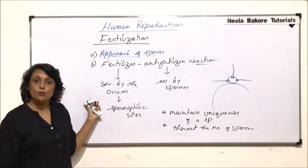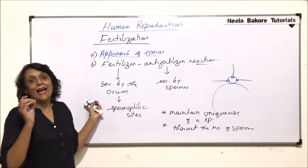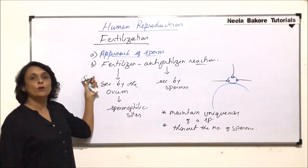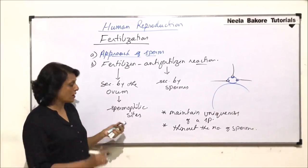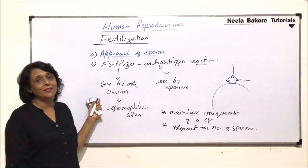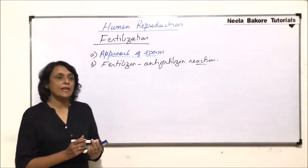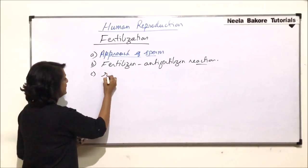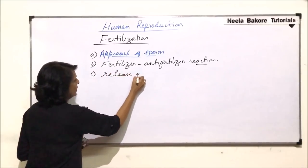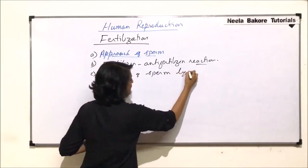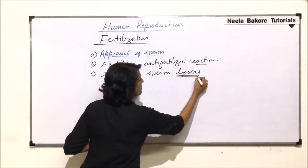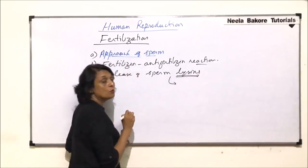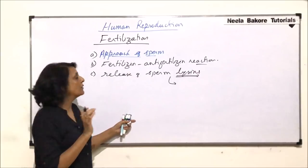The next thing which is going to take place is, the acrosome is going to rupture, releasing the sperm lyses. So that is going to be the step 3. Let us talk about what happens after this. Next step is going to be release of sperm lyses. Sperm lyses are basically lytic enzymes. And there are 3 enzymes which are present in this secretion.